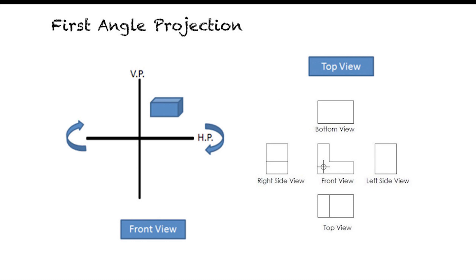In first angle projection, to draw front and top views, object front and top views are projected on vertical and horizontal planes respectively. After that, to bring drawing views on a 2D plane, as per the rule of projection, the horizontal plane is rotated in the clockwise direction.